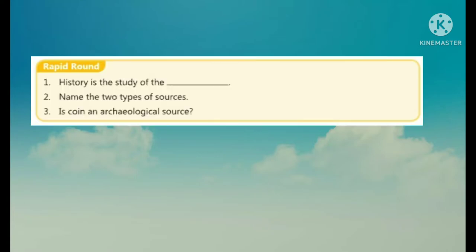Rapid round: History is the study of the past. Name the two types of sources — archaeological sources and literary sources. Is a coin an archaeological source? Yes, the coin is an archaeological source.